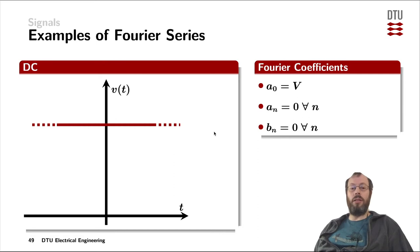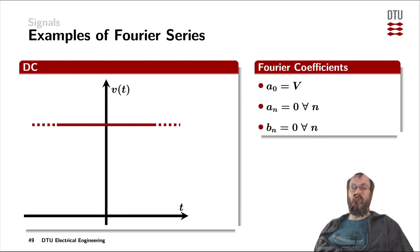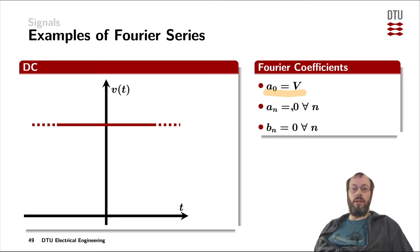Now let's look at some examples. A DC value is one of the simplest representations of the Fourier series. If we have a DC value, A0 represents the mean value of the original signal itself, and we don't have to add up any harmonics. So A0 is the original amplitude of the signal, and all the other harmonics — all the sine waves and cosine waves — are weighted with zero for all n.